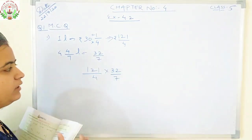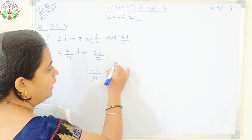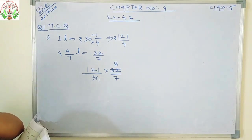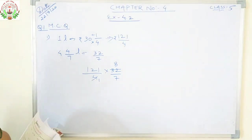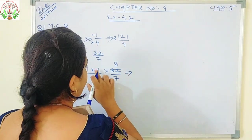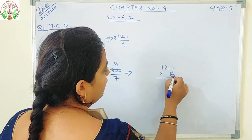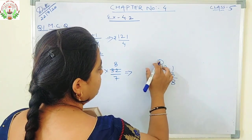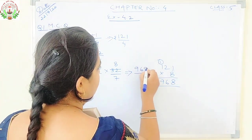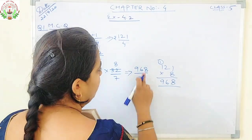First we will see whether any cancellation is possible. 4 ones are 4, 4 eights are 32 — so 4 and 32 cancel, leaving 8. So we will multiply: 121 into 8 in the numerator. 8 ones are 8, 8 twos are 16 carry 1, 8 ones are 8 plus 1 is 9. Numerator will be 968 and denominator 7 into 1 will be 7.